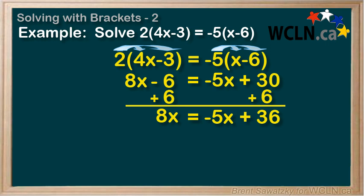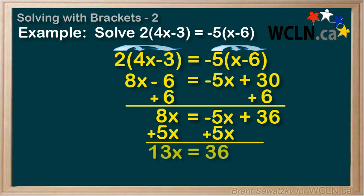So now we can deal with the negative 5x, and we do so by adding 5x to both sides. On the left, we have 8x plus 5x is 13x. And on the right, we're left with 36.